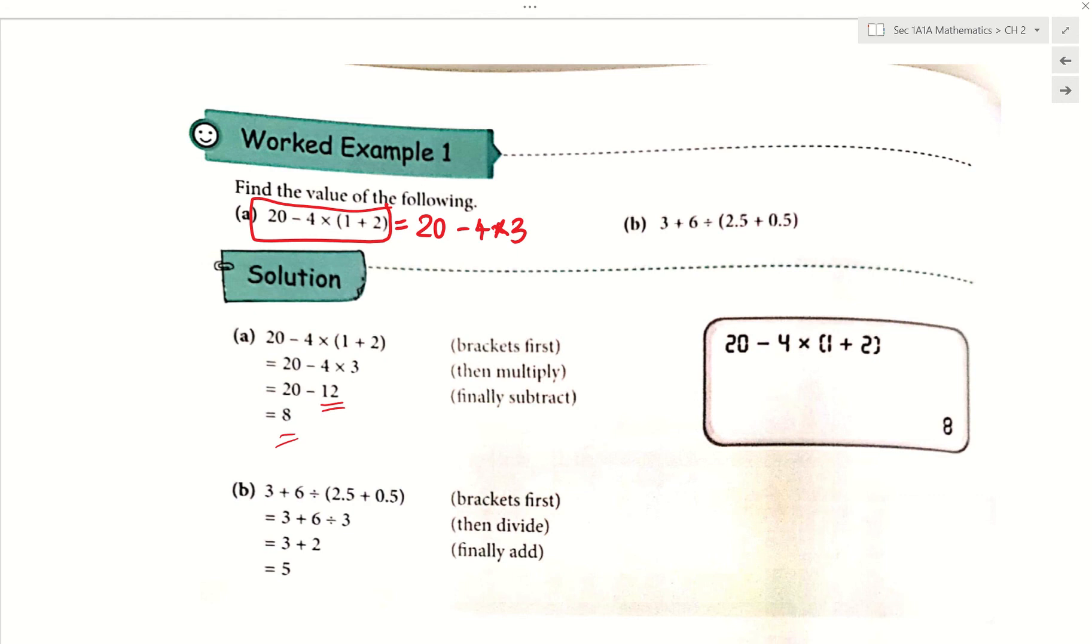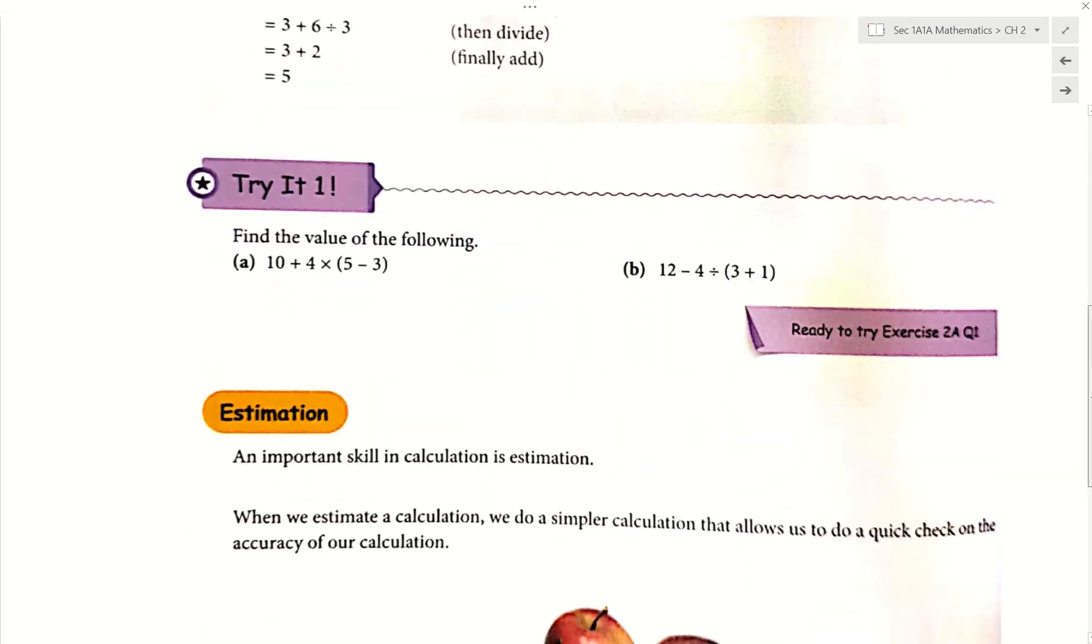Now part B. What should we do first? Plus, divide, bracket. Which one? Bracket. So we have 3 plus 6 divide by, I only copied, I did not think about anything. Now you are telling me to do the bracket first. So what is 2.5 plus 0.5? 3. Now we have 3 plus 6 divide by 3. What should we do first? Divide. So 3 don't change, plus don't change, 6 divide by 3 is 2. Now we are left with 3 plus 2 which is 5.